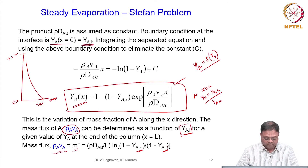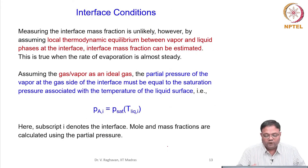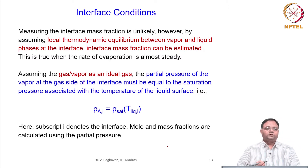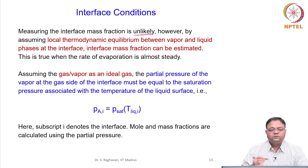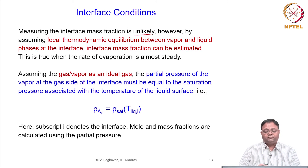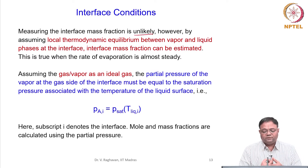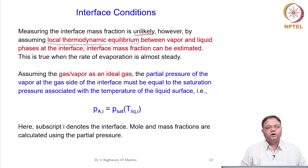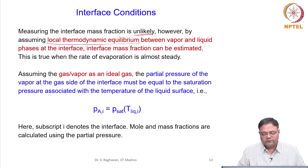The interface quantity Y_AI is yet to be determined. Measuring the interface mass fraction directly is very difficult — it will involve a lot of uncertainties and will not be accurate. However, we can measure the temperature at the interface with accurate techniques. By getting the interface temperature, we can apply local thermodynamic equilibrium.